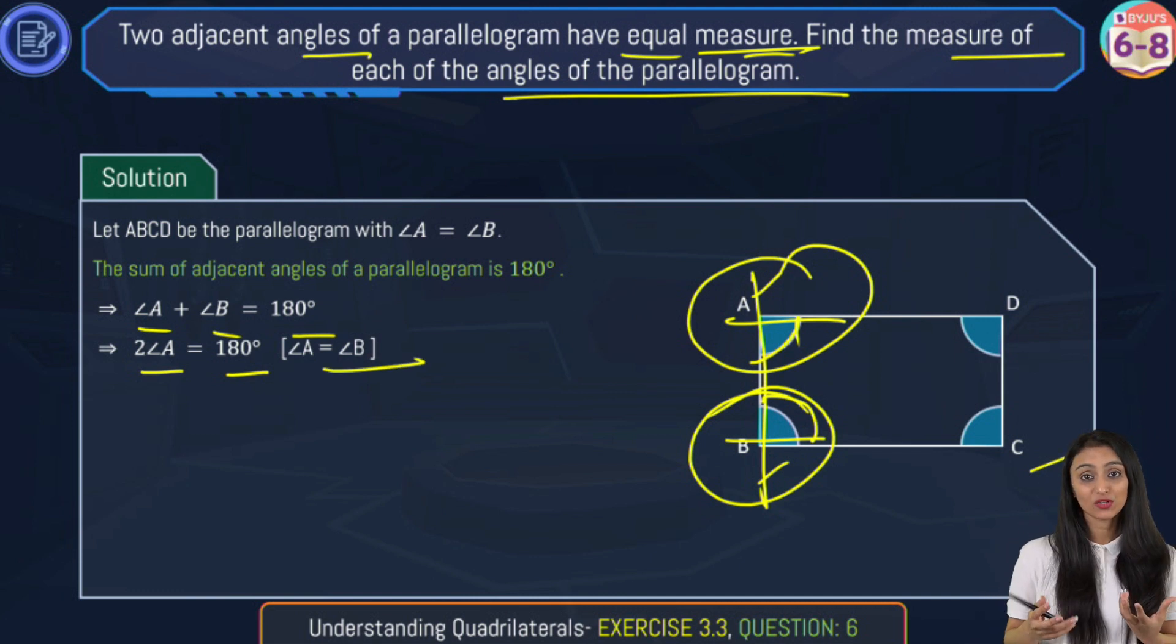So whenever we are solving any question of geometry, reasoning is very important. So angle A is going to equal 180 degrees divided by 2, which is going to be 90 degrees.